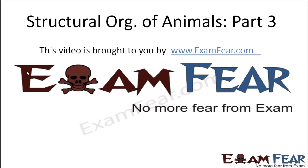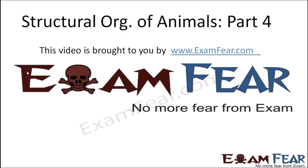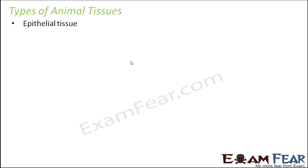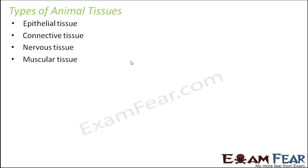Hello friends, this video on structural organization of animals part 3 is brought to you by examfew.com. No more fear from exam. Look at the different types of animal tissues. Now broadly there are 4 types of animal tissues: epithelial tissue, connective tissue, nervous tissue, and muscular tissue. These are the 4 major types of tissue present inside the body of any animal, and we will talk about each of these tissue types in detail and see if they have further subtypes as well.